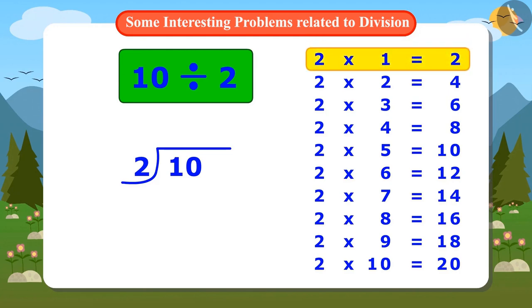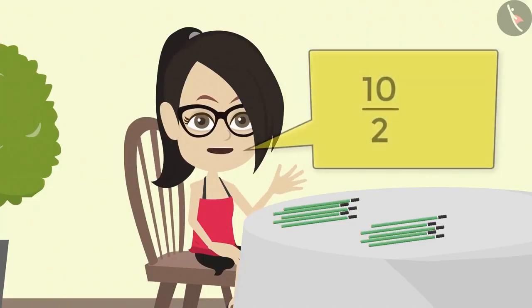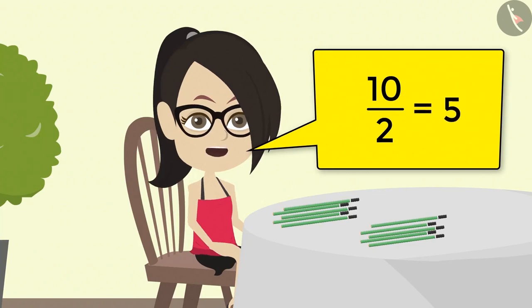Two ones are two. Two twos are four. Two threes are six. Two fours are eight. Two fives are ten. Two fives are ten. That is, two times five is ten. The answer is five when ten is divided by two.